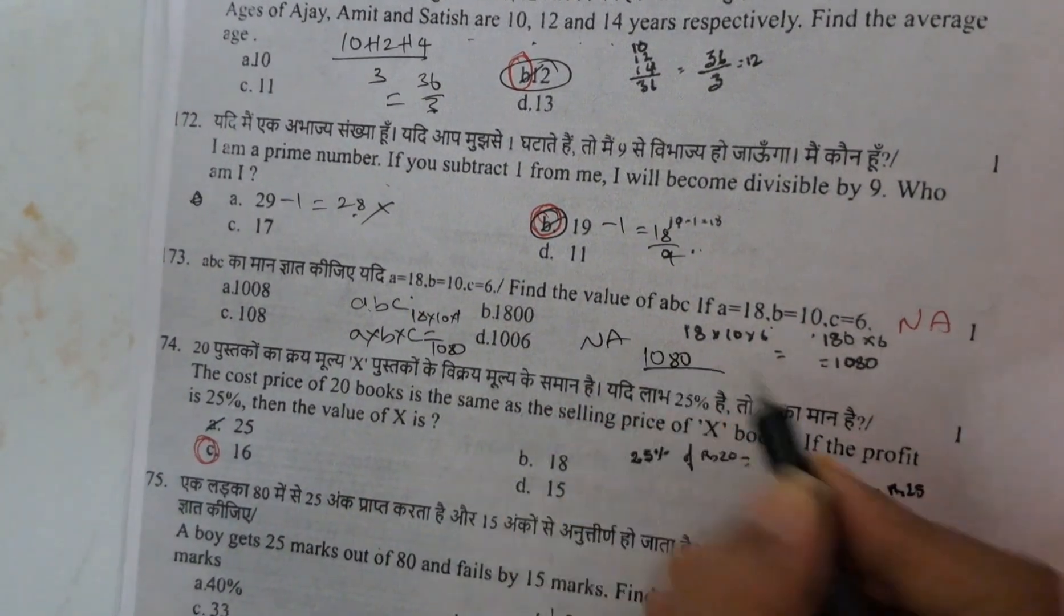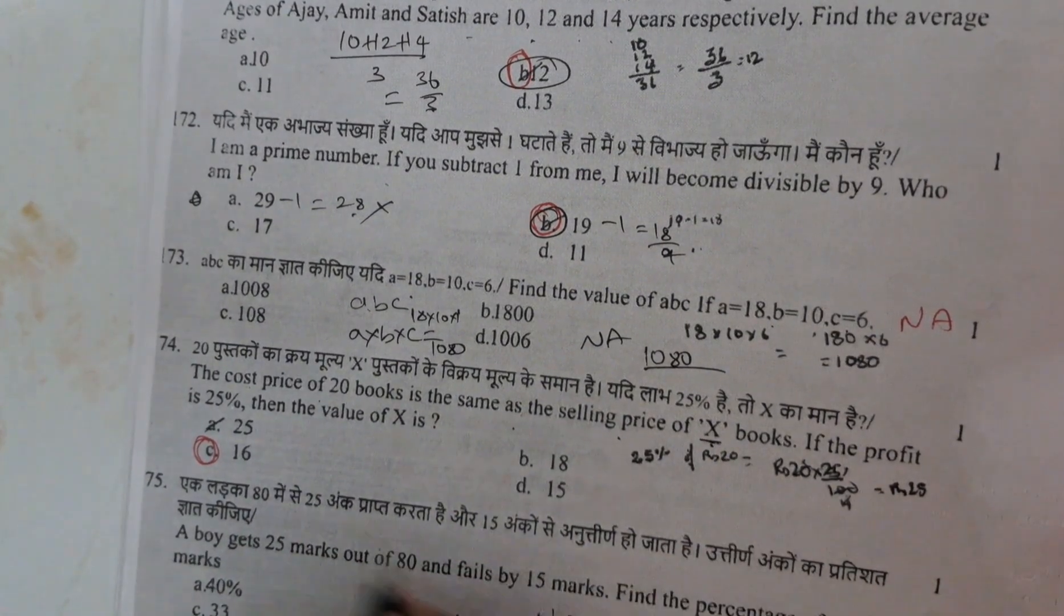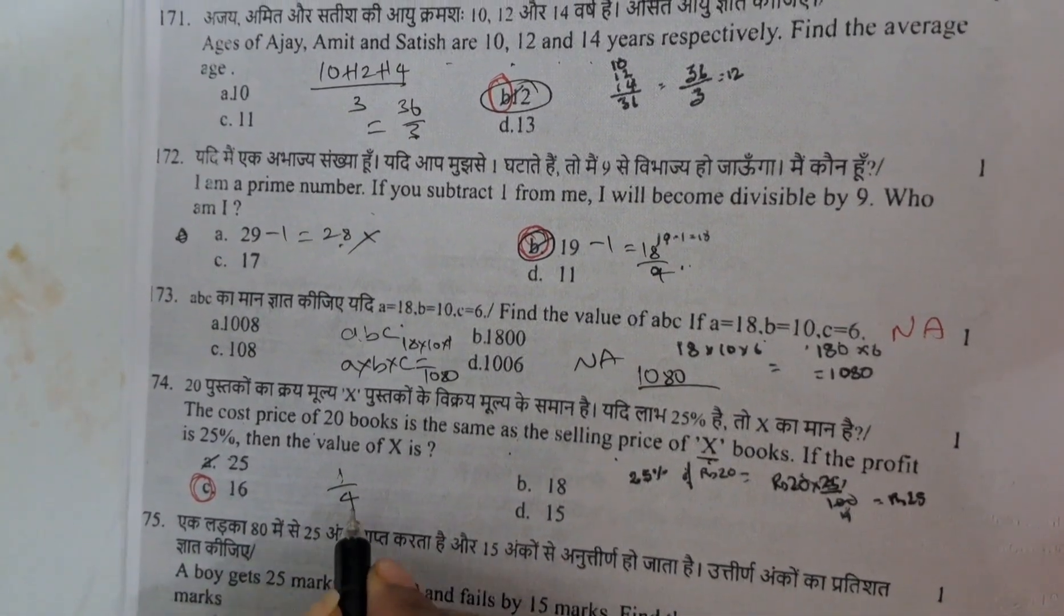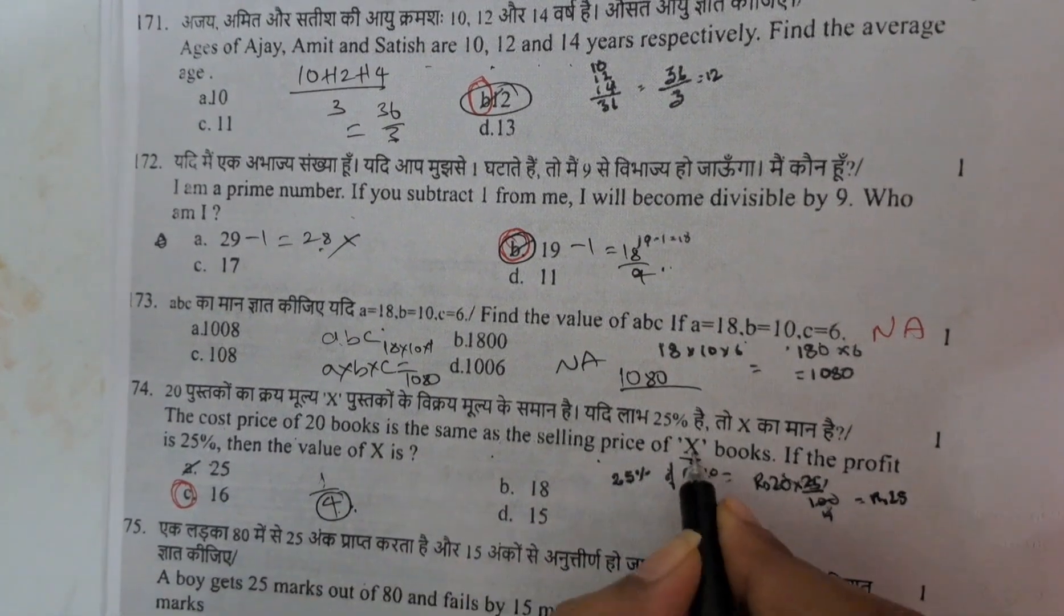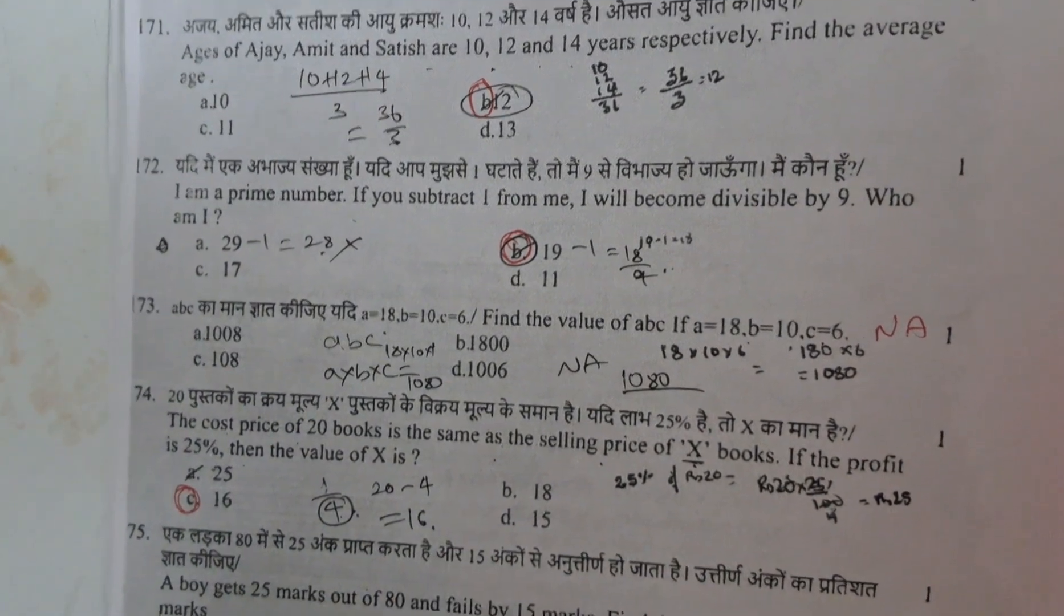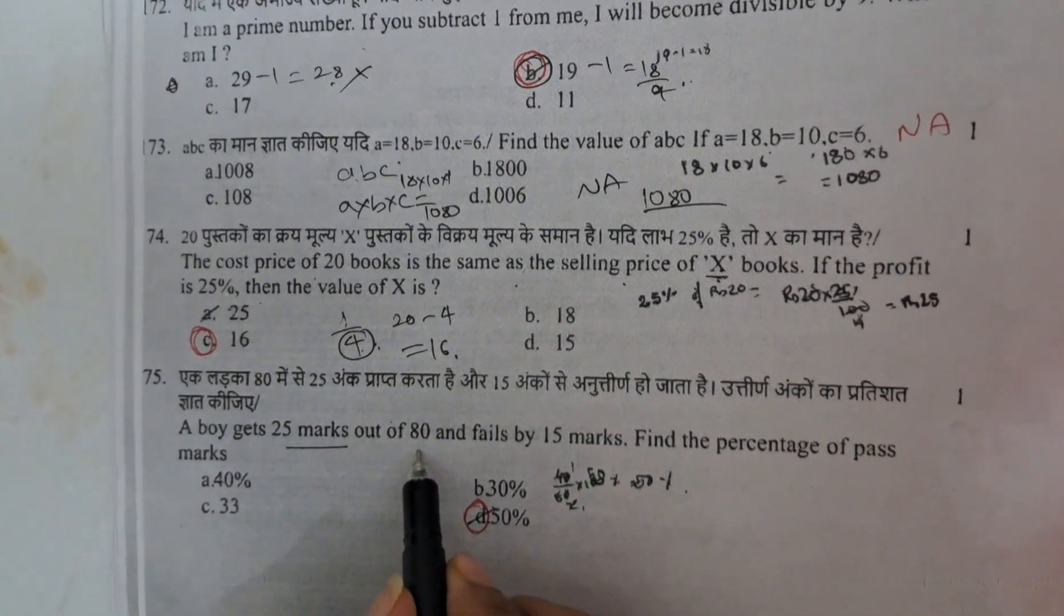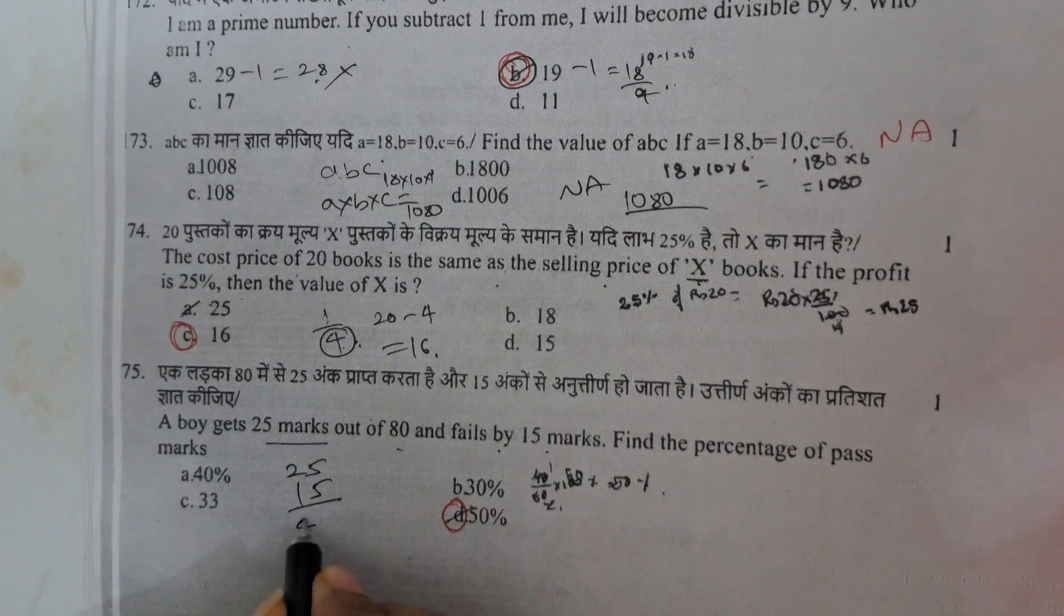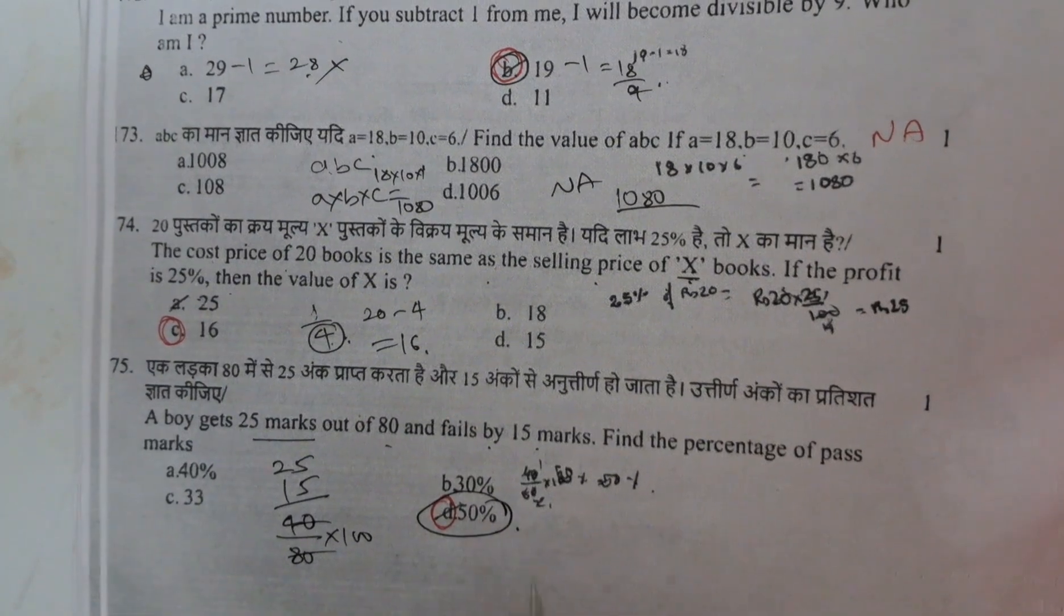When the cost price of 20 books is the same as the selling price of some books. The profit percentage is 25%. Profit percentage 25% means 1 by 4. 1 by 4, means 4 books are less. Means 20 minus 4 equals to 16. And next here, a boy got 25 marks out of 80, failed by 15. Means he got 25, failed by 15. Means how many need to pass? 40. 40 by 80 into 100. Means 50% is the pass marks.